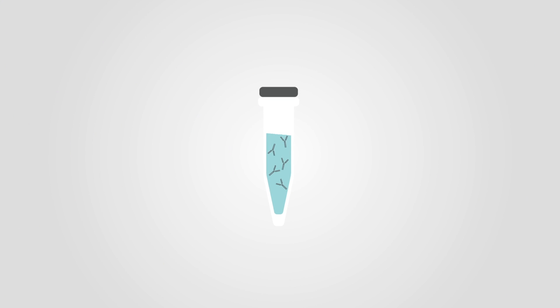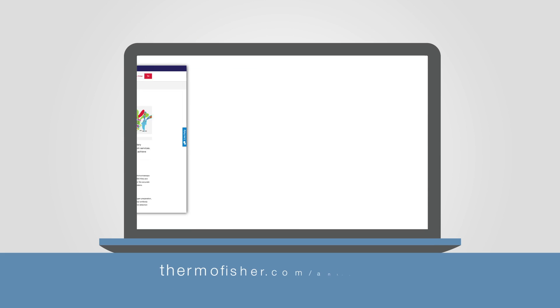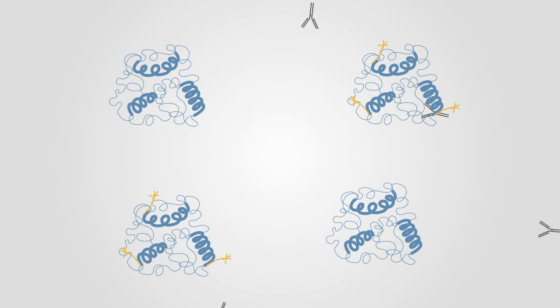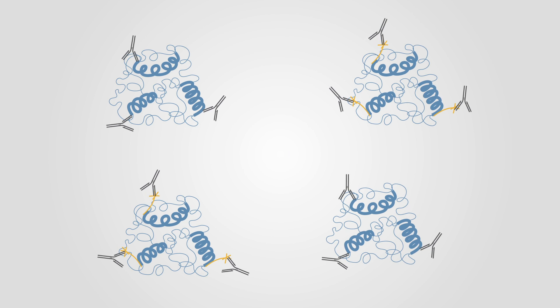Make sure you select a primary antibody that recognizes the phosphorylated target and has been functionally tested for Western blot applications. You can use the antibody search tool on our website. Some antibodies will detect both the phosphorylated and non-phosphorylated versions of the target antigen.